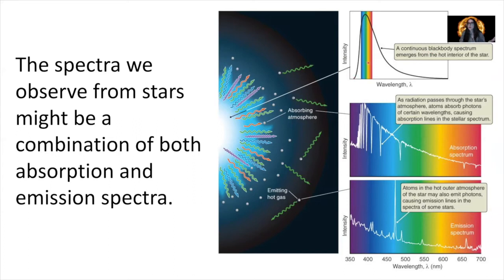Let's say we have a particular star, and here is the spectra of that star — the continuous spectra before any absorption or emission occurs. This axis here is the intensity: how intense is that light at a particular wavelength that the star is emitting? This particular star is emitting most strongly near visible wavelengths of light.